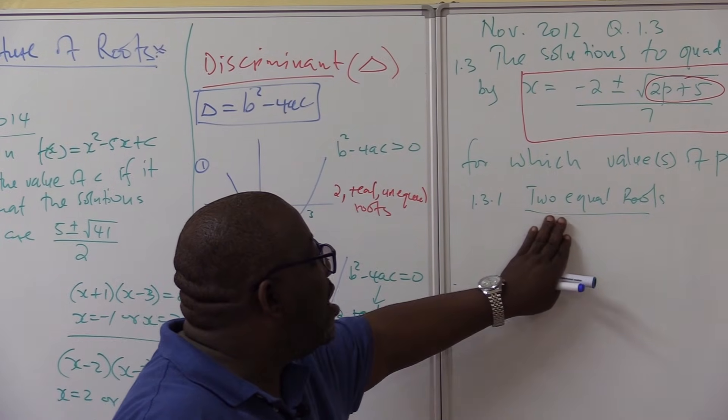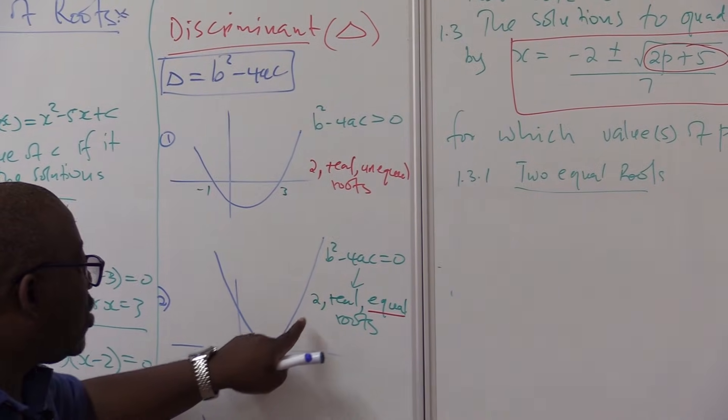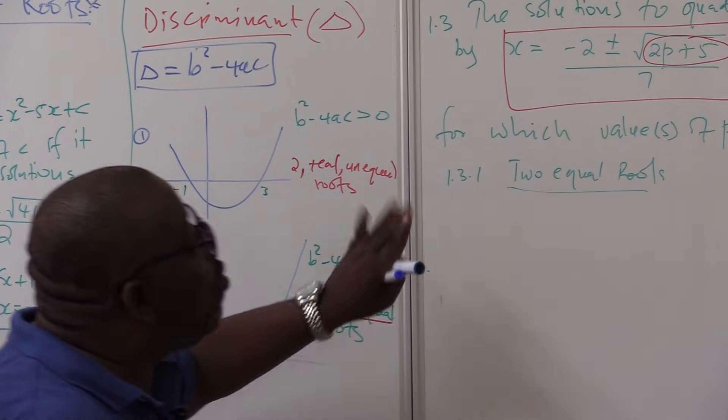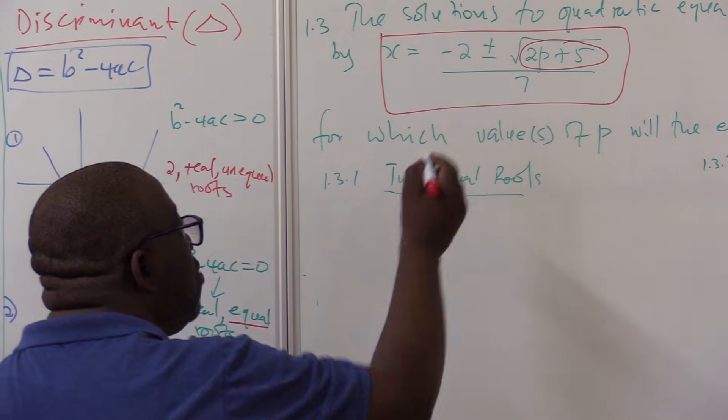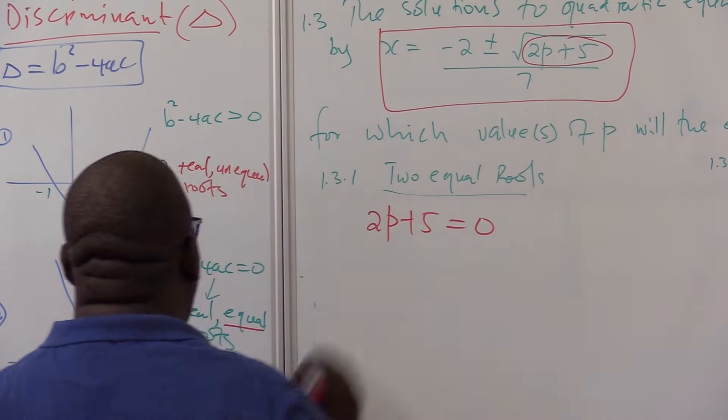But this is telling us exactly two equal roots, two equal roots. So it's this diagram. There are two real and equal roots. So your discriminant must be equal to zero. And what is our discriminant in this case? It is 2p plus 5. How should it be?